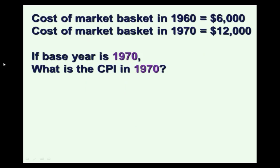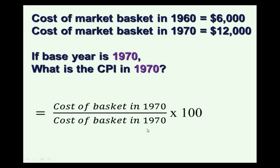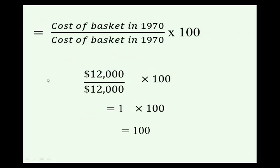Using the same data, let's calculate the CPI in 1970 with the same base year. The cost of the market basket in 1970 relative to the base year — which is also 1970 — means the numerator and denominator are exactly the same. So we have $12,000 over $12,000, which is 1, times 100, equals 100. We can see that in the base year, the Consumer Price Index is always equal to 100 by construction.